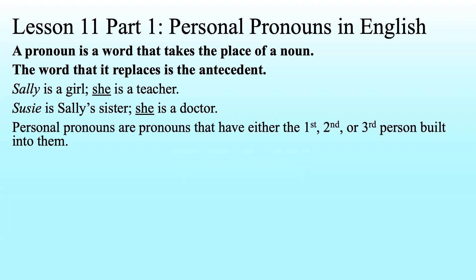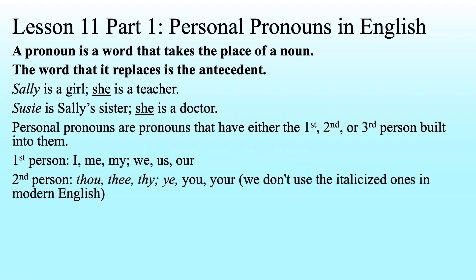Personal pronouns are pronouns that have first, second, or third person built into them. For first person in English, we have I, me, my, we, us, and our. For second person, we have thou, thee, and thy; ye, you, and your. We don't use the italicized ones in modern English. I'm showing them so that if you see them in the King James Version, you'll know what they are. We'll get to more specifics a little later, but I'll go ahead and introduce them now.